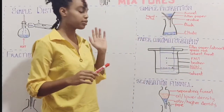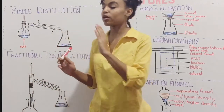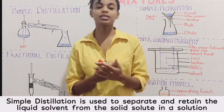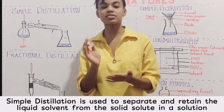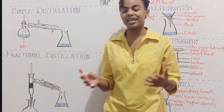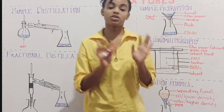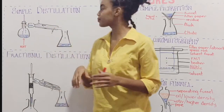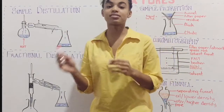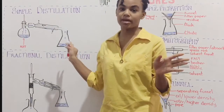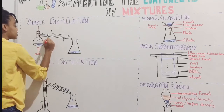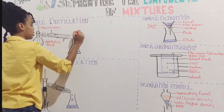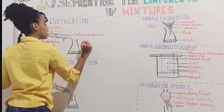We have covered simple filtration, paper chromatography, and separating funnel. Now we're going to cover simple distillation and fractional distillation. The purpose of simple distillation is to separate and collect the liquid solvent from a liquid-solid solution. We're going to look at the method by which you collect the solvent from the liquid-solid solution. Here we have a distillation flask, a thermometer, a Liebig condenser, and a collecting flask.